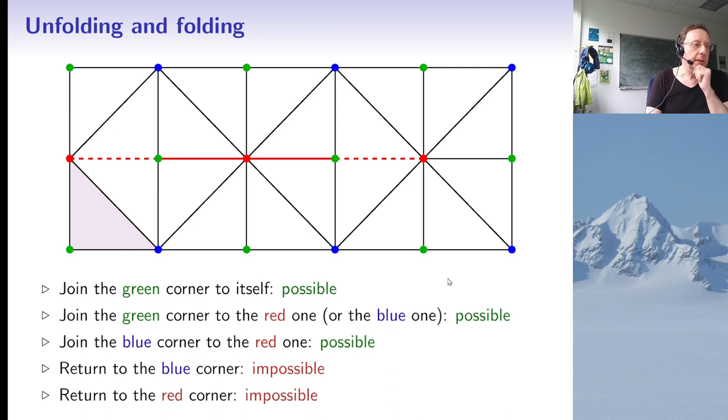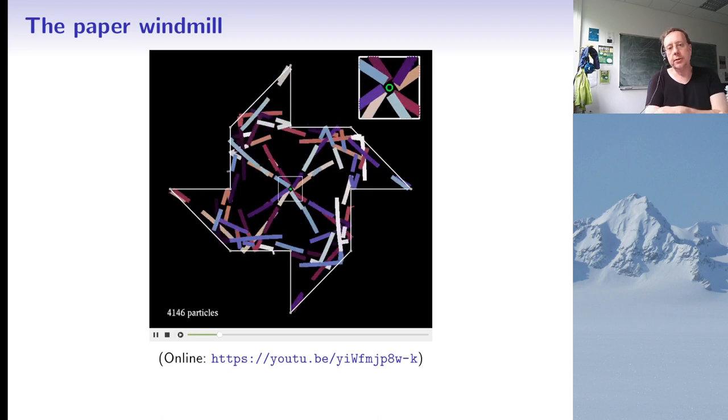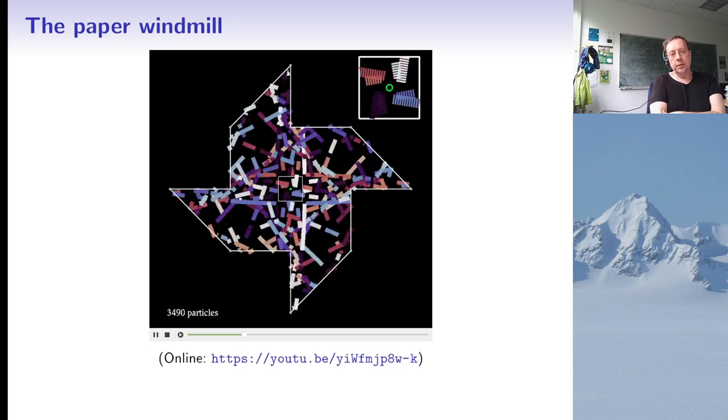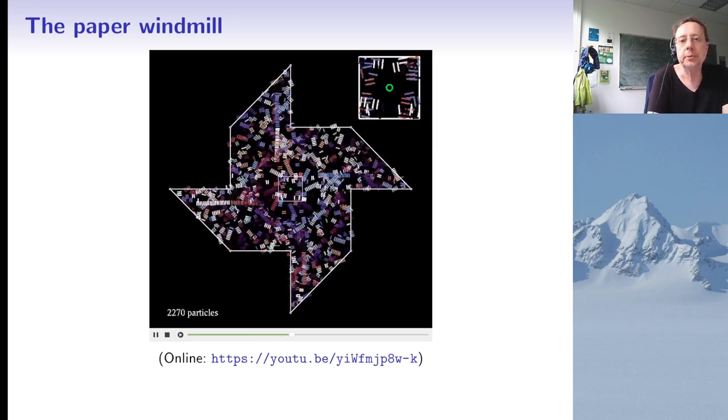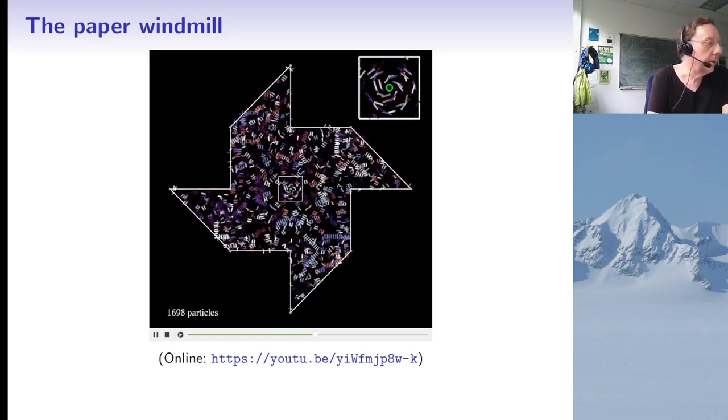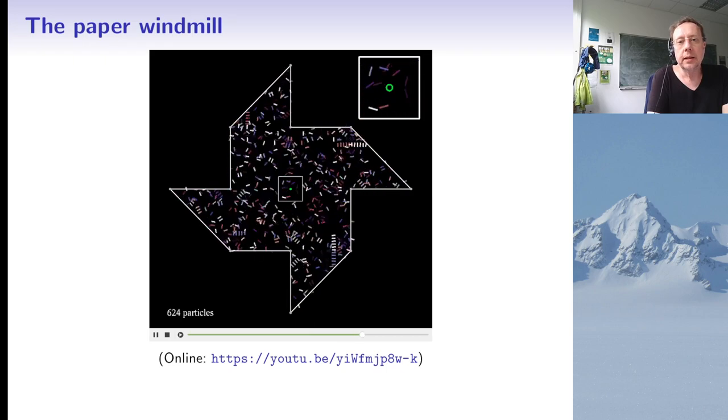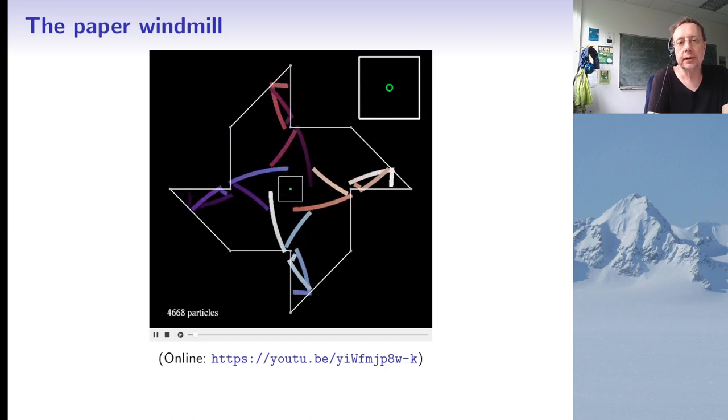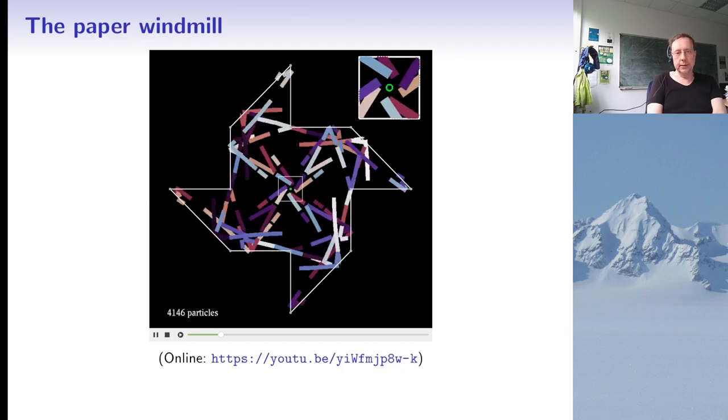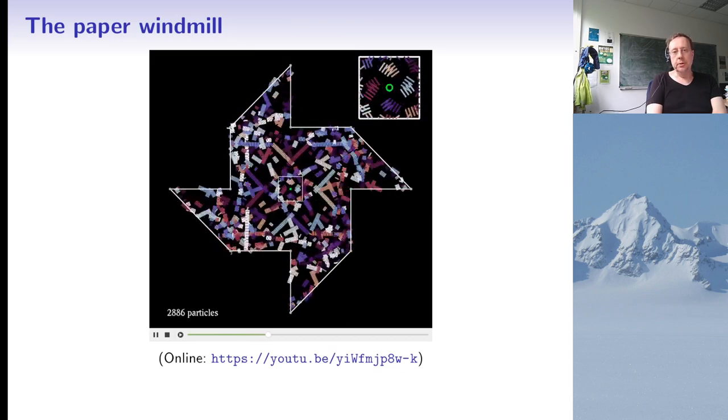Now with this, we can already understand a somewhat simpler case. It's not yet Tokarsky's room where you have two points so you can't go from one point to the other. It's a billiard with a non-self-illuminable point. What happened here is that we started from the green point with a few thousand particles. Particles hitting the corners are absorbed. What you see here is that the particles never return to the green point they started from. We started with 5000 particles and you can see in the zoom that some of them come quite close to the green dot, but they never reach it.